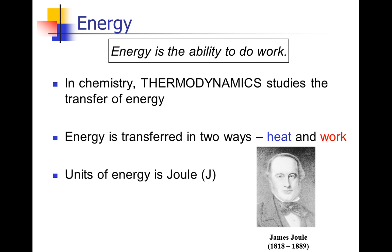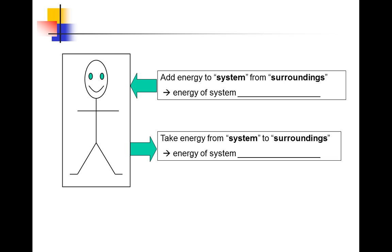We're talking about transfer of energy, so we might have a chemical reaction where energy is given off — heat might be given off — or a chemical reaction where energy is acquired; for example, we might have to apply pressure or heat it up to make it go. For any system — something that we are studying — we can add energy to the system from the surroundings, in which case the energy of the system will increase. Or we can take energy away from the system and put it into the surroundings; for example, a reaction might give off heat, in which case the energy of the system decreases.